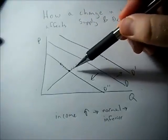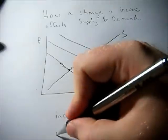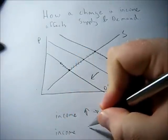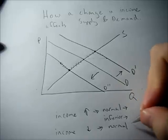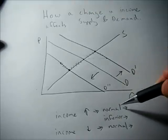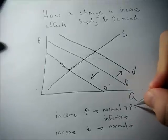Now, if income goes down and the good is normal, we get the same outcome as income going up when the good is inferior. Here we had price and quantity go up. Here price and quantity went down. So here price and quantity will go down.